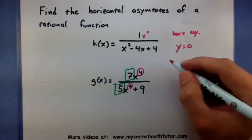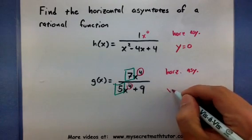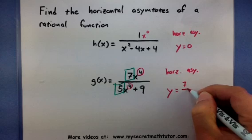So, this also has a horizontal asymptote, but it occurs at y equals seven-fifths.